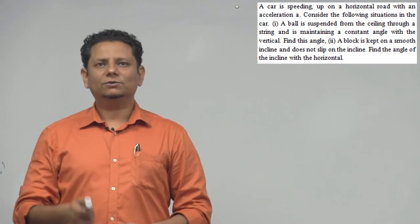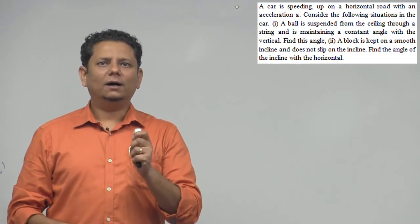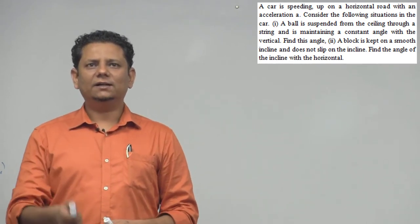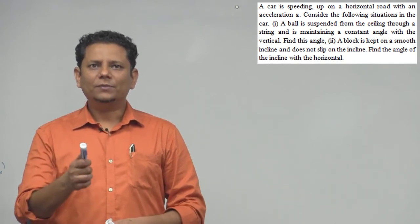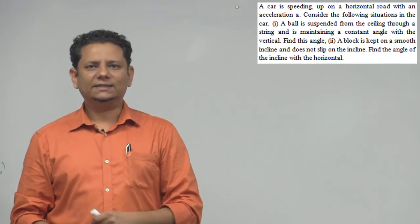Next question. The car is speeding up on a horizontal road with an acceleration A. Consider the following situation in the car. First: a ball is suspended from the ceiling through a string and is maintaining a constant angle with the vertical. Find this angle.